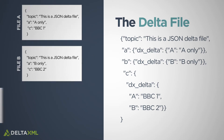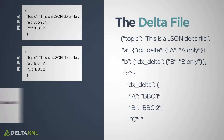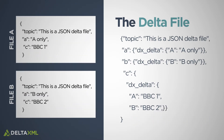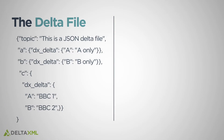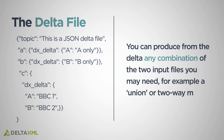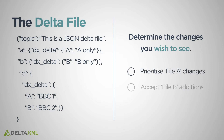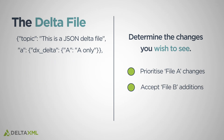As an aside, the delta has been designed so that it can represent changes between more than two files, but we'll not go into the details of that here. The contextual delta is very useful — you can produce from it any combination of the two input files you may need, for example a union or a two-way merge. That union could choose either A or B where there are differences, or you can even make different choices according to the context.